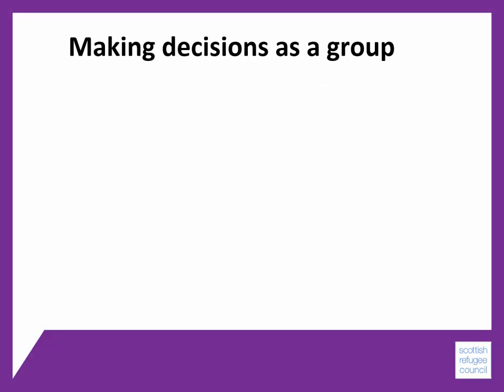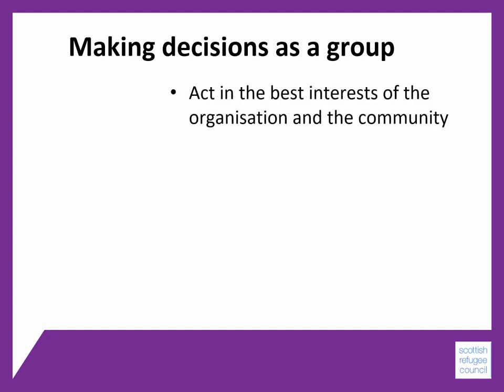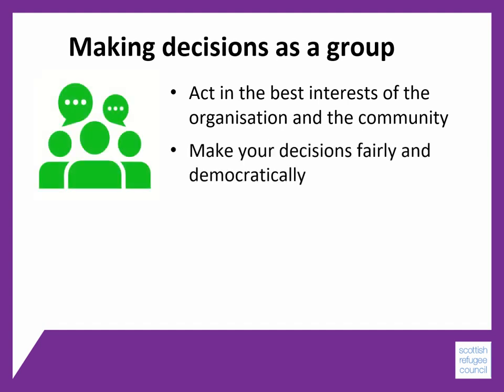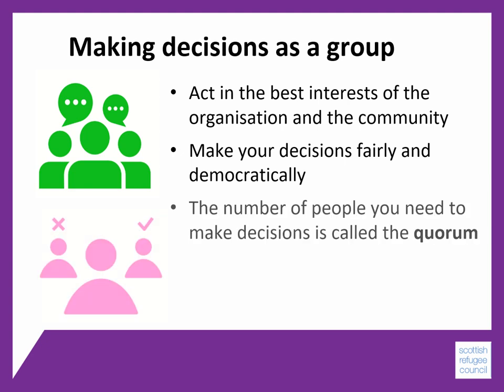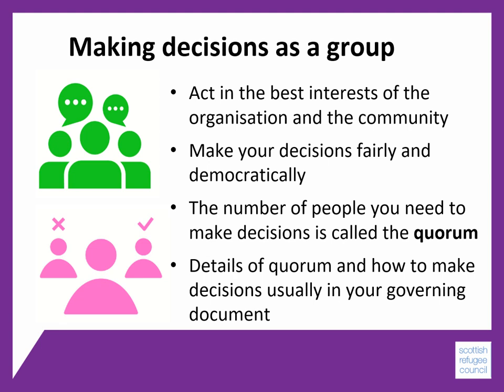Meetings are often about making decisions. Making decisions as a group is different from making decisions as an individual, as there are a range of different views to consider. When making decisions as a group, make sure you're acting in the best interest of your organisation and your community, and that you make your decisions fairly and democratically. You should also be aware of the number of people needed to be present to make a decision — this is called quorum — and the details are usually in your governing document.